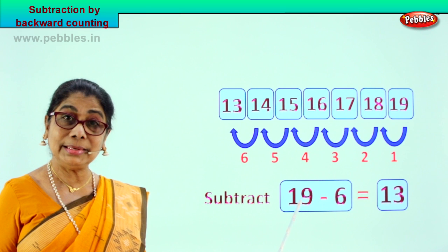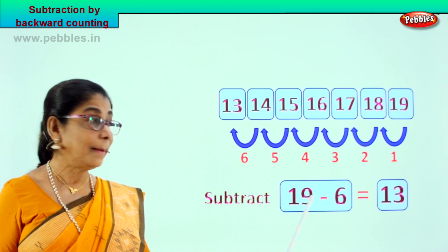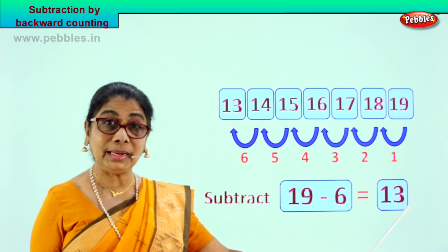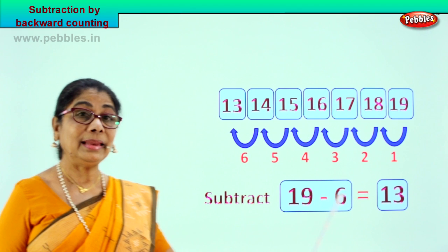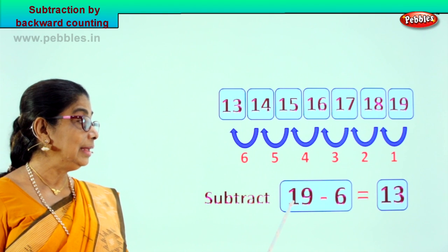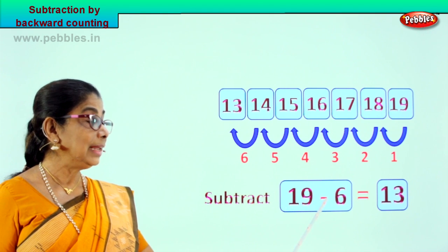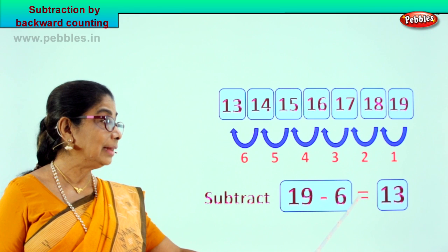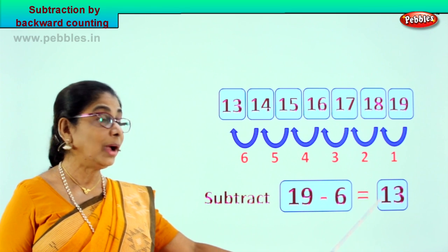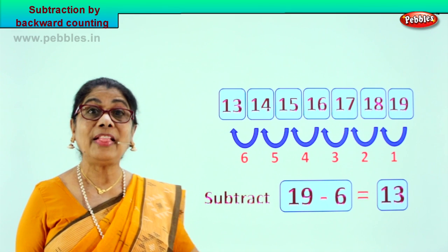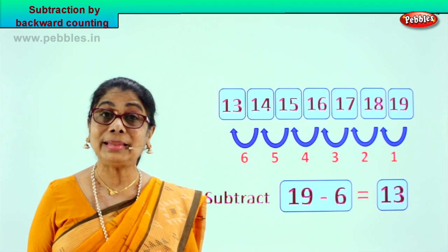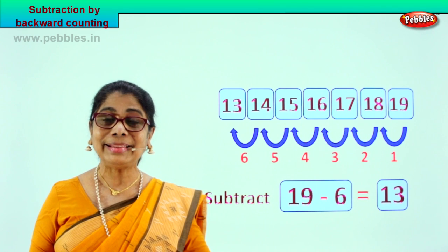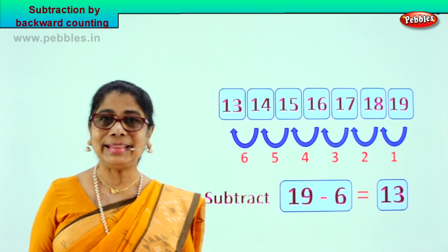So 19 minus 6 is equal to 13. Take away 6 steps backward and that will give you answer 13. Did you enjoy doing it? Shall we take another exercise?